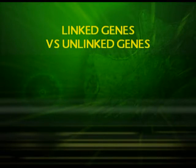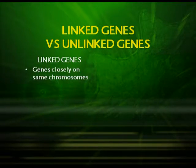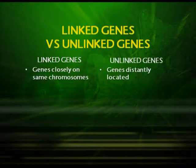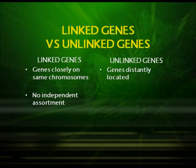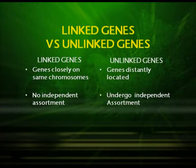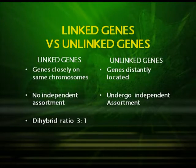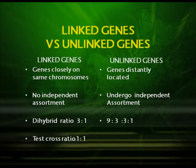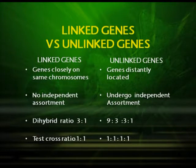Now we are in a position to differentiate linked genes and unlinked genes. Linked genes are genes closely located on the same chromosome; unlinked genes are distantly located. In linked genes, no independent assortment takes place, whereas independent assortment is seen in unlinked genes. The dihybrid ratio in linked genes is 3:1, while in unlinked genes it is 9:3:3:1. The test cross ratio in linked genes is 1:1, while in unlinked genes it is 1:1:1:1.